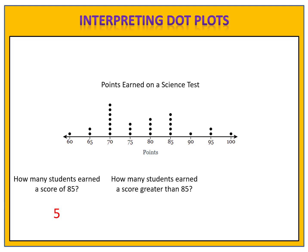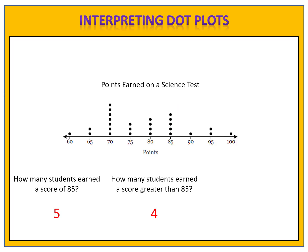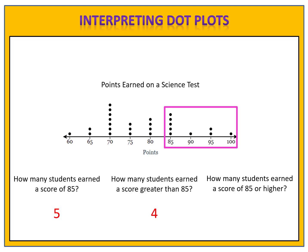How many students earned a score greater than 85? We look at the scores that are above 85 and count the dots. There are four dots, so four students earned a score greater than 85. How many students earned a score of 85 or higher? That would include 85 and above. We count the dots, and we see that there are nine of them, so nine students earned a score of 85 points or higher.